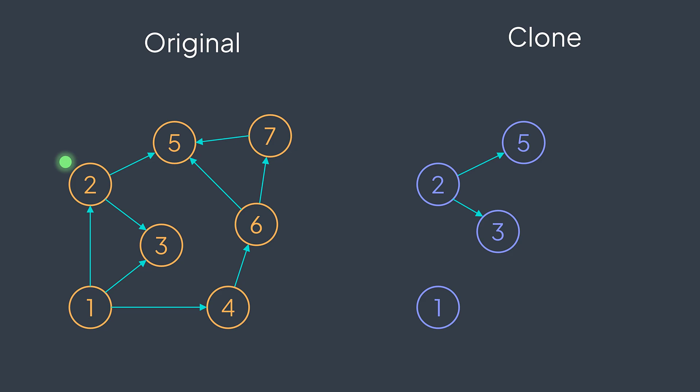This one has no more neighbors to visit. We return it to the previous node. Back to the initial node, the next neighbor is three. We go to it and we create a new node with the same value. No neighbors, we backtrack.